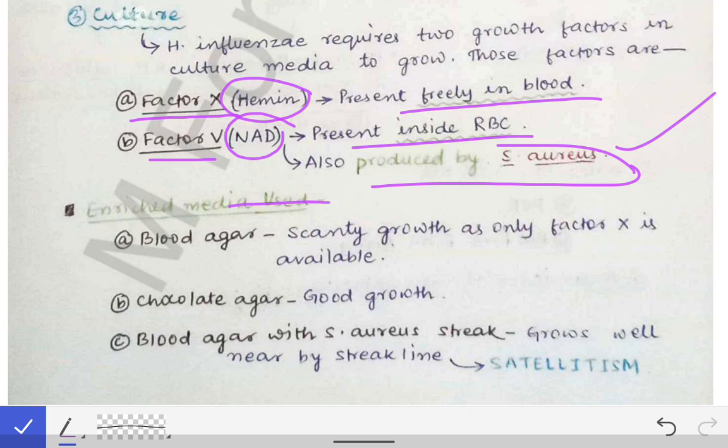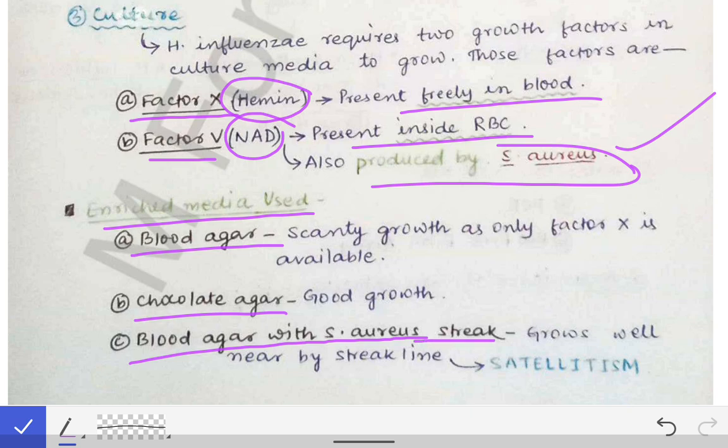The enriched media used are blood agar, chocolate agar, and blood agar with a Staphylococcus aureus streak. On blood agar, there is scanty growth because only Factor X is available — Factor V is not released since RBCs are intact. On chocolate agar, RBCs are broken, so both Factor X and Factor V are available, giving good growth. On blood agar with S. aureus streak, the S. aureus produces Factor V while Factor X is in the plasma, also giving good growth.